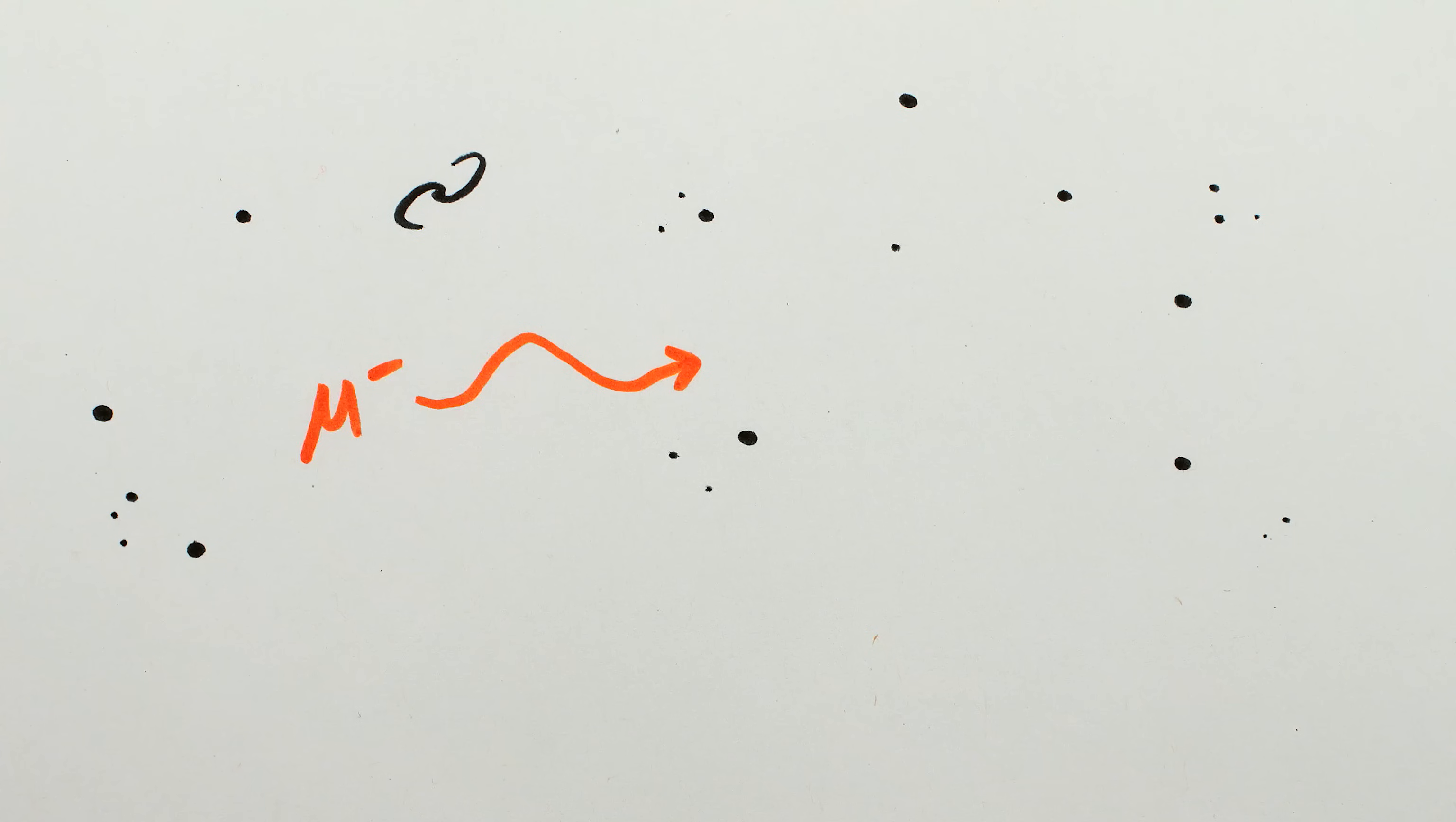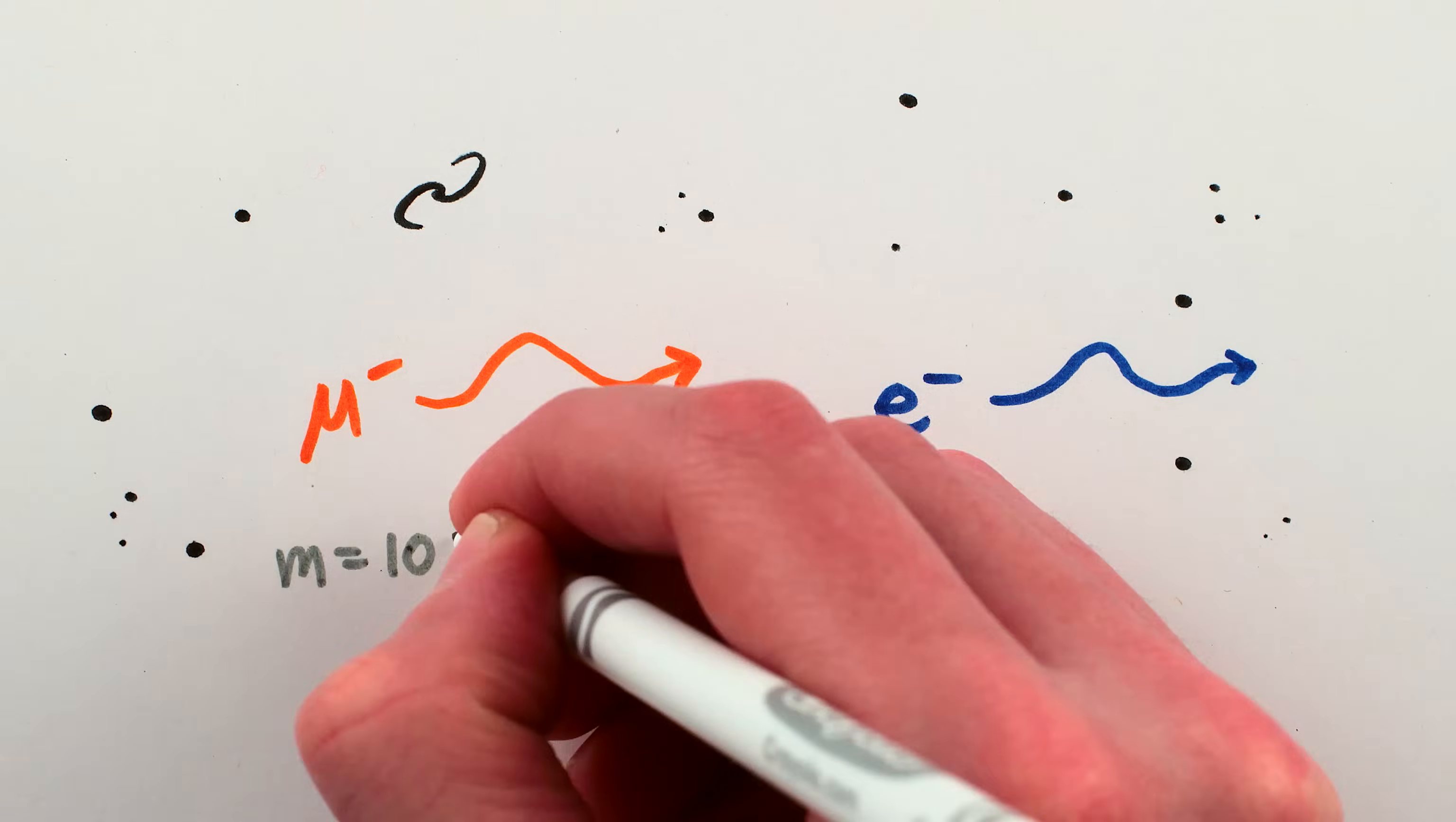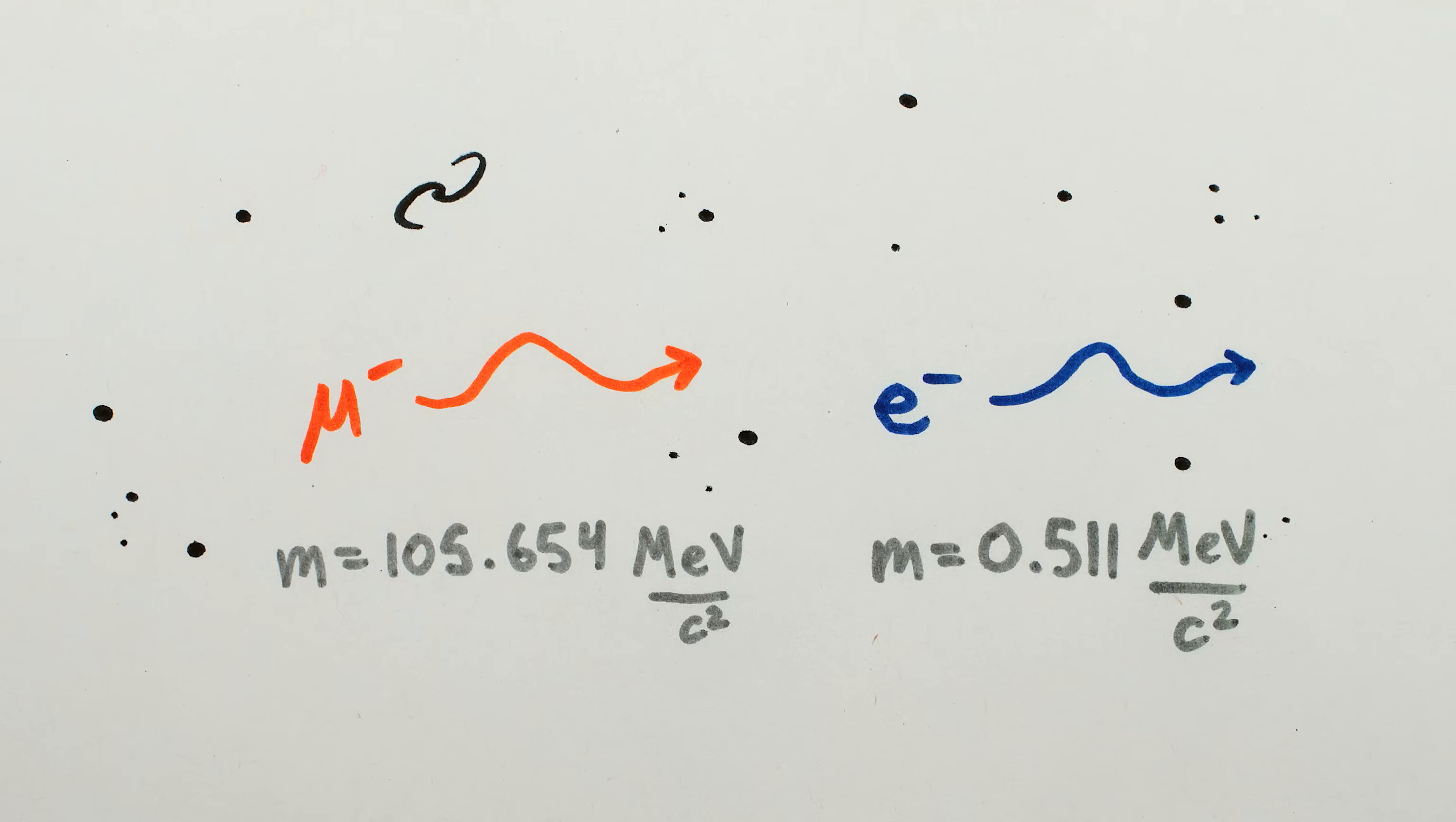Muons are fundamental particles in our universe that are essentially exactly the same as electrons, but heavier – 206.77 times heavier, to be precise.